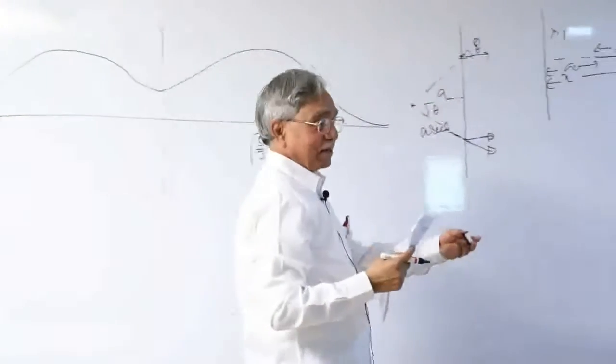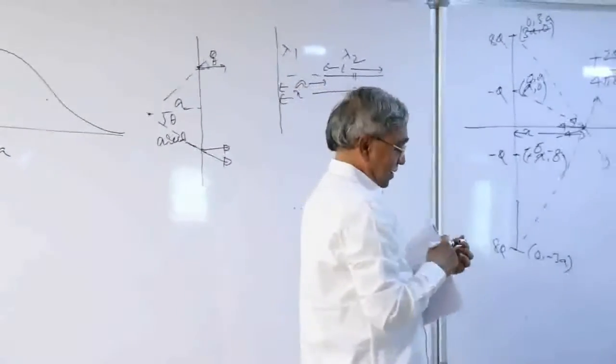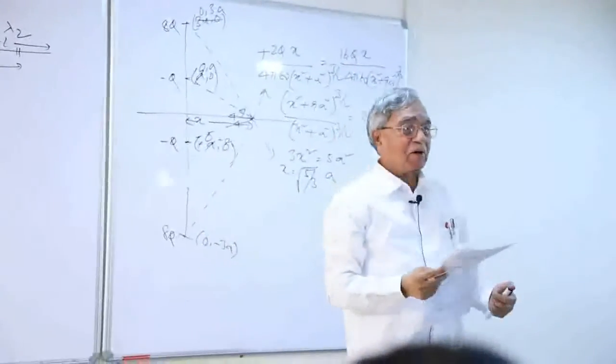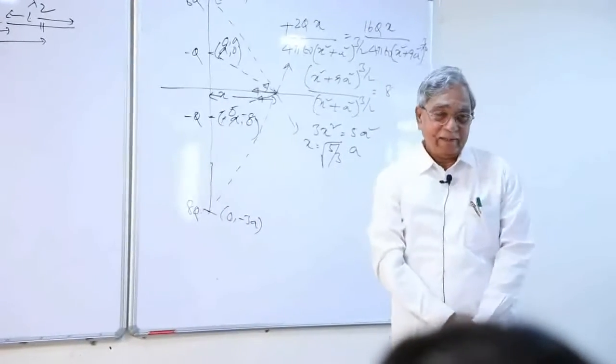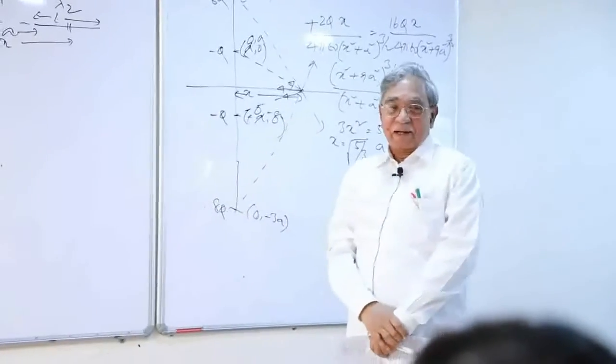See, you see the net charge: 8Q by 4 pi epsilon naught 3a minus Q by 4 pi epsilon naught a. That is net positive. It is not 0.